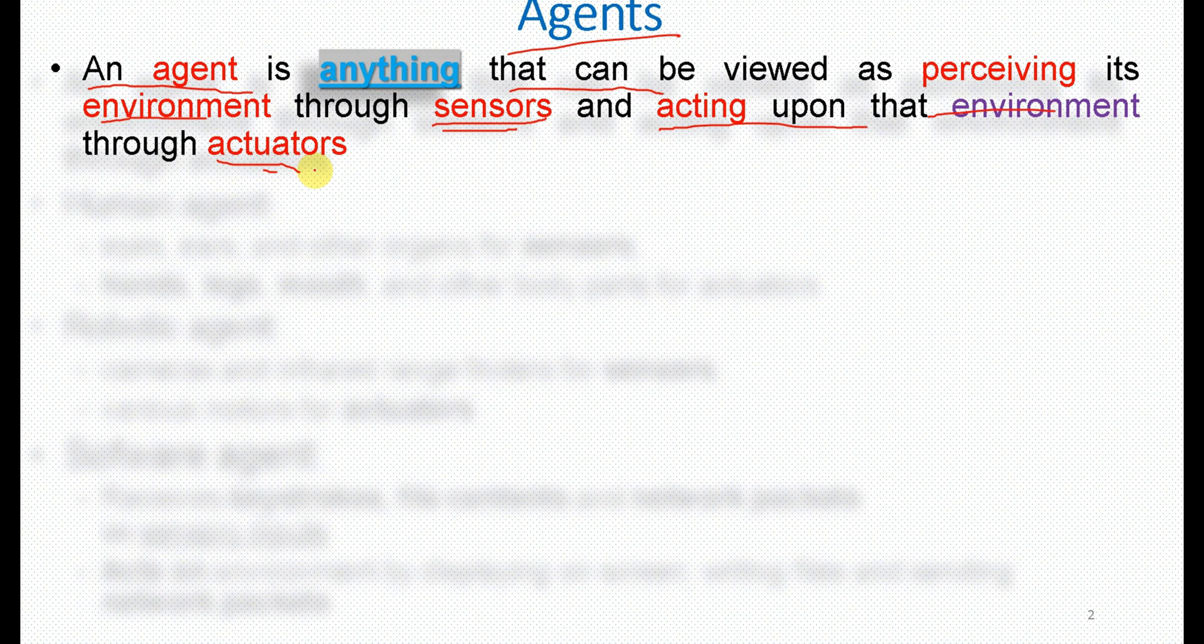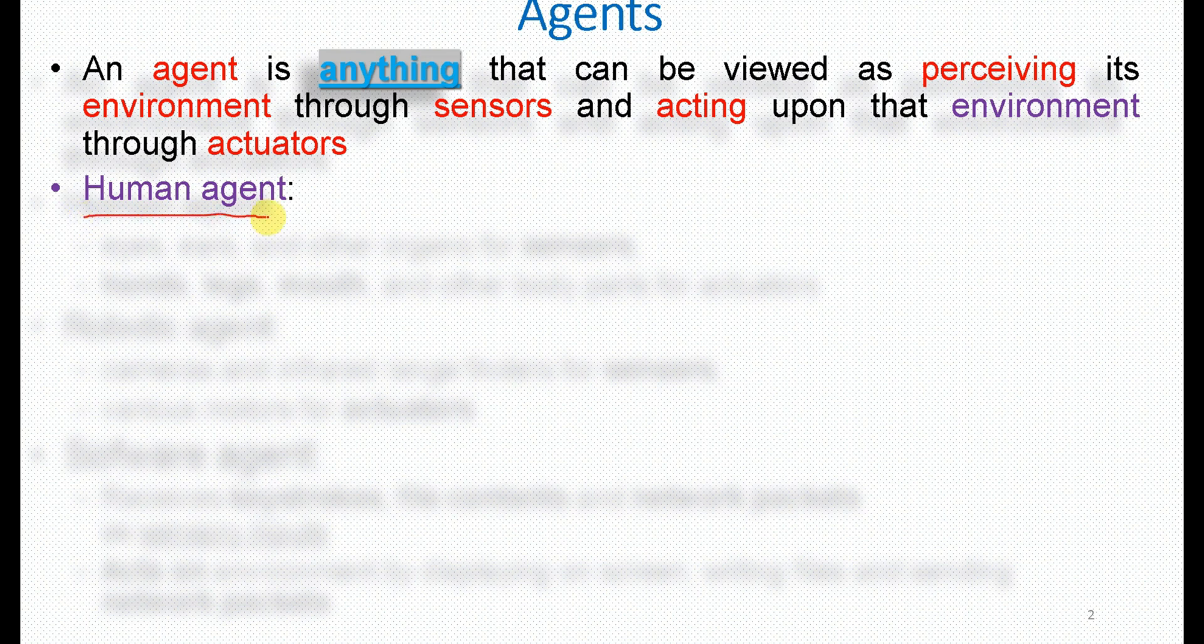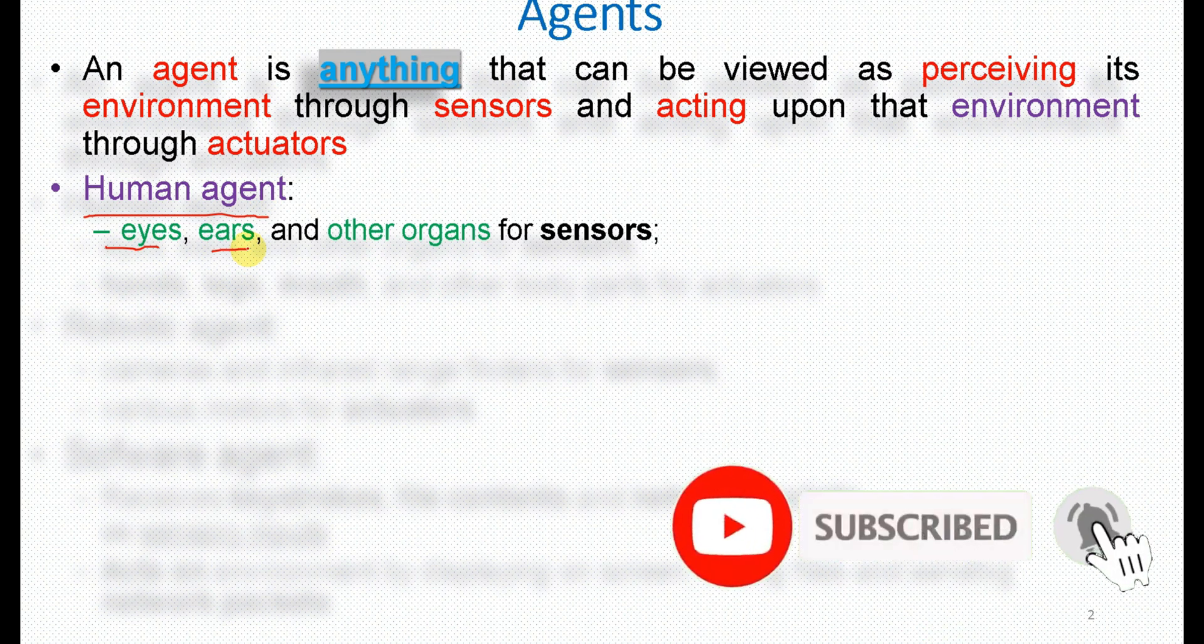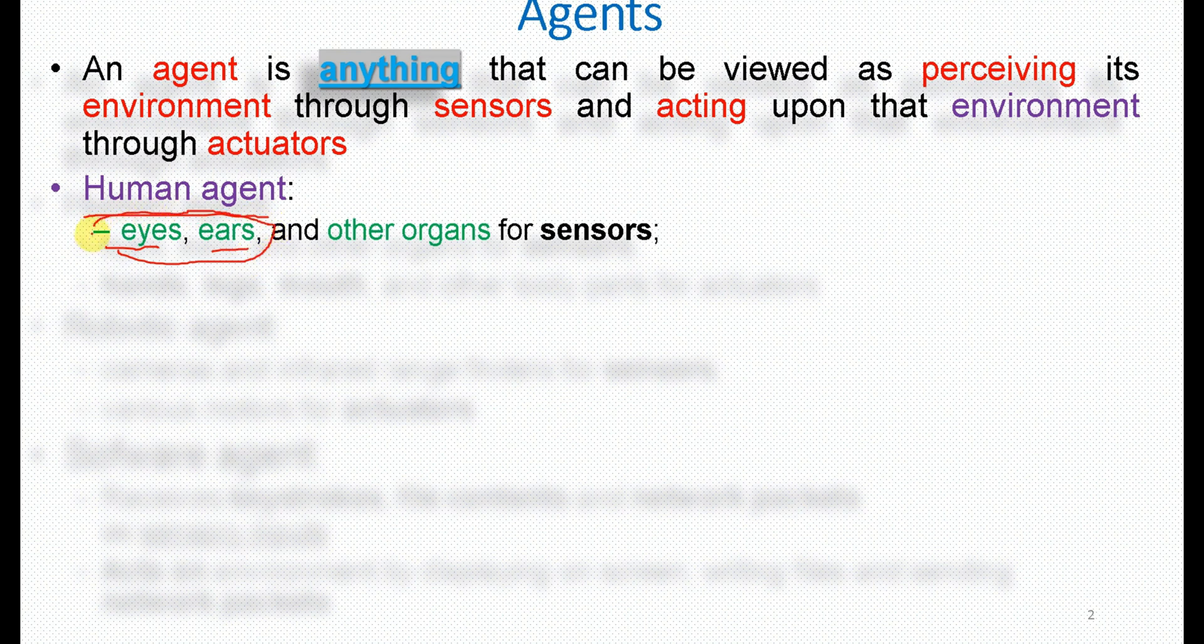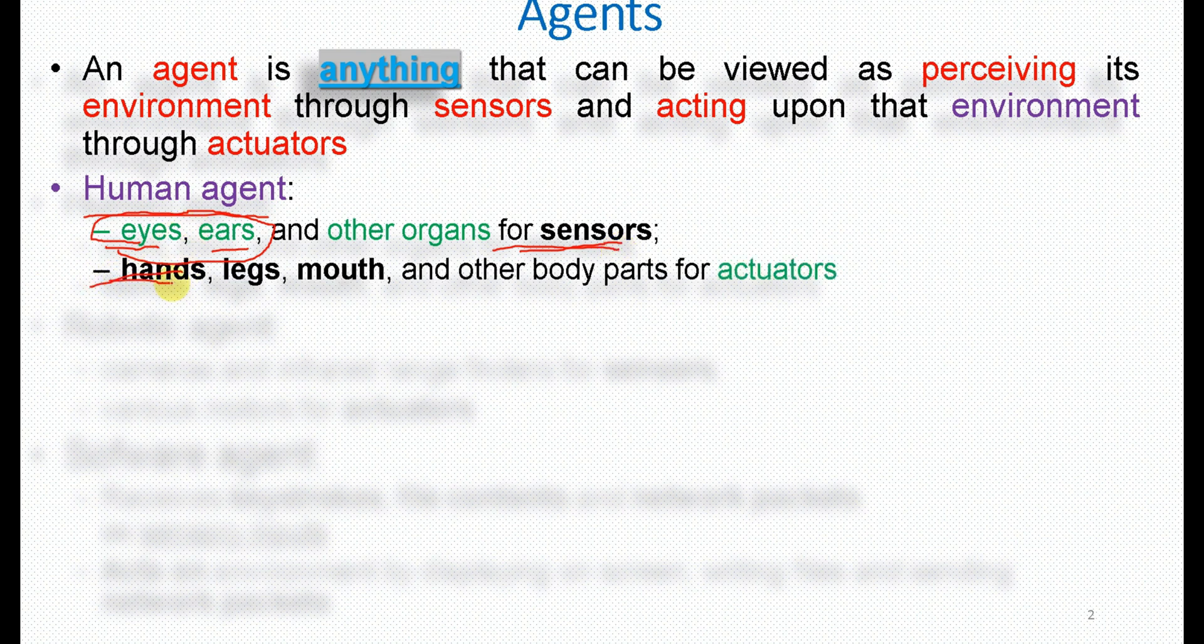There are human agents. A human agent, for example, has eyes, ears, and other organs for sensors. And actuators - hands, legs, and other body parts are considered as actuators in order to act upon the environment.